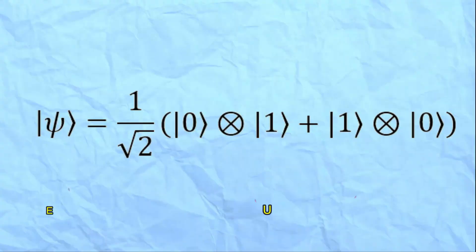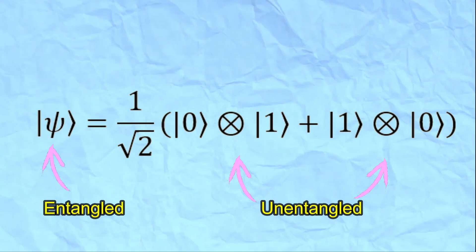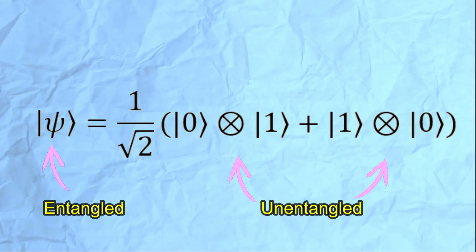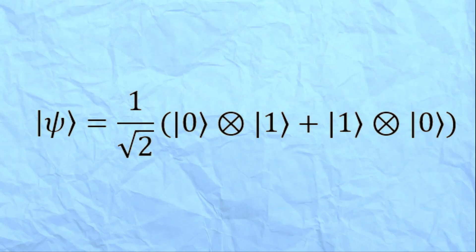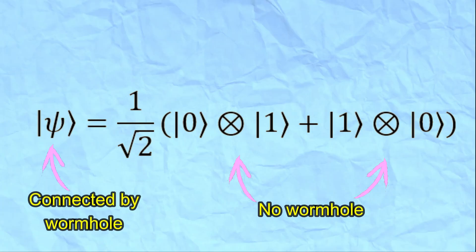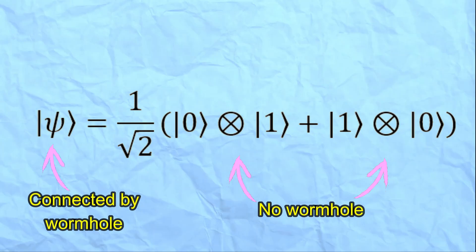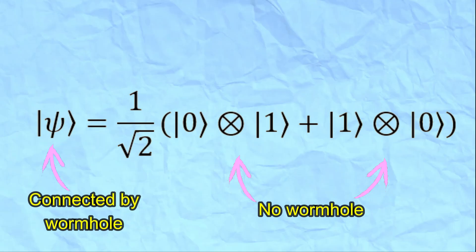This proposal has some problems, though. An entangled state is a linear combination of states that are not entangled. So the state in which two particles are joined by a wormhole should be a linear combination of states in which particles are not joined by a wormhole. This seems a very strange conclusion, and people are working on this problem.